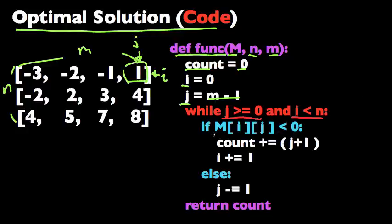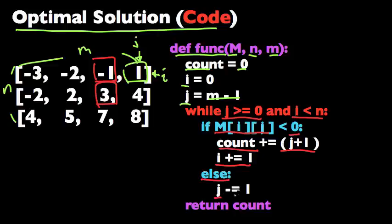If the element we're looking at, if the number we're looking at is not a negative number, then we'll move our pointer to the left. We'll try the same thing with the number on the left and we'll repeat this process over and over again until we get the total number of negative numbers in this matrix, and then we're going to return that.